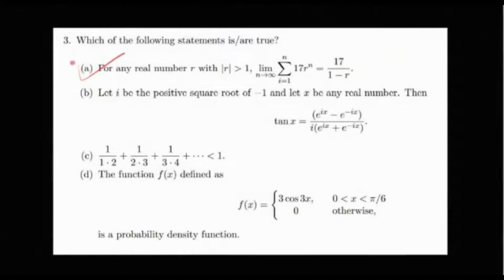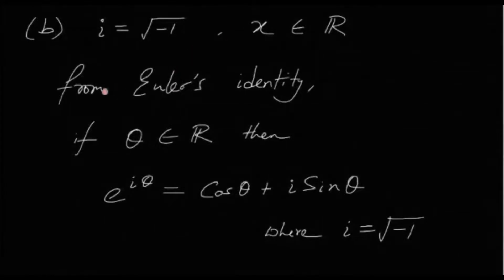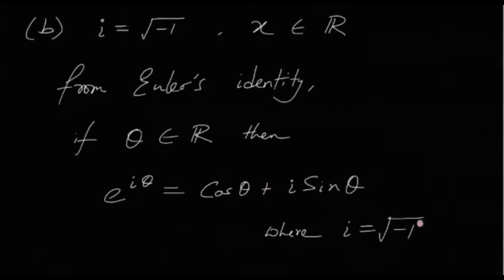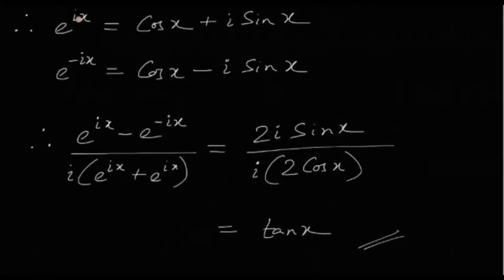Option B: let i = √(−1) (iota) and x be any real number. We check whether tan(x) = [e^(ix) − e^(−ix)] / [i · (e^(ix) + e^(−ix))]. From Euler's identity, e^(iθ) = cos θ + i·sin θ. Therefore e^(ix) = cos x + i·sin x and e^(−ix) = cos x − i·sin x.